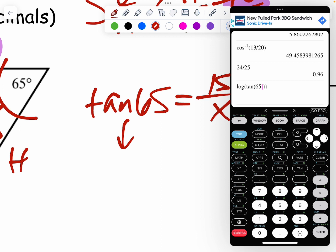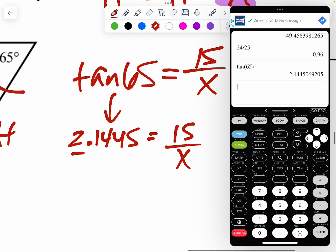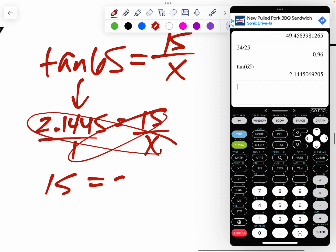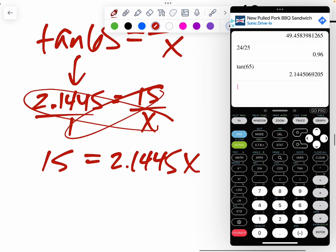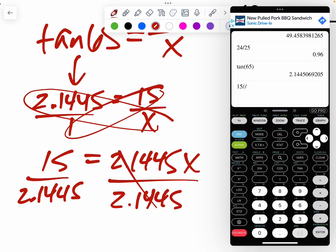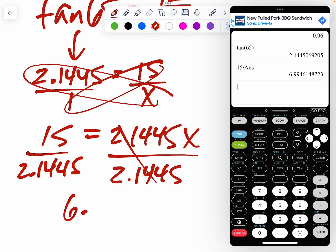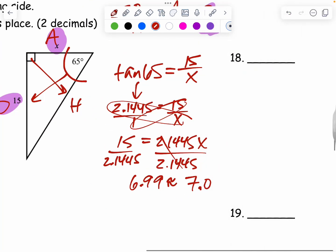I'm going to tan 65 in the calculator. Let's see what that is. Tan 65. I'm going to use four decimal places. So I'm just going to cut off one, four, four, five. So my rounding is really accurate. And I'm going to cross multiply this. I'm going to do 15 times one is 15. I'm going to do 2.1445X. To get X by itself I divide by 2.1445 and I'm going to get 6.99, which rounds to 7.0 if you're typing in one decimal place or nearest tenth.